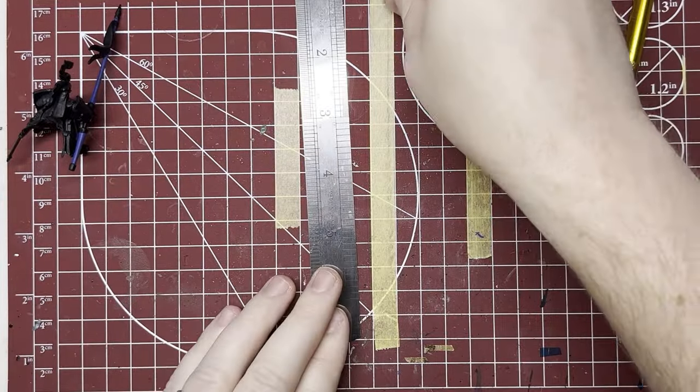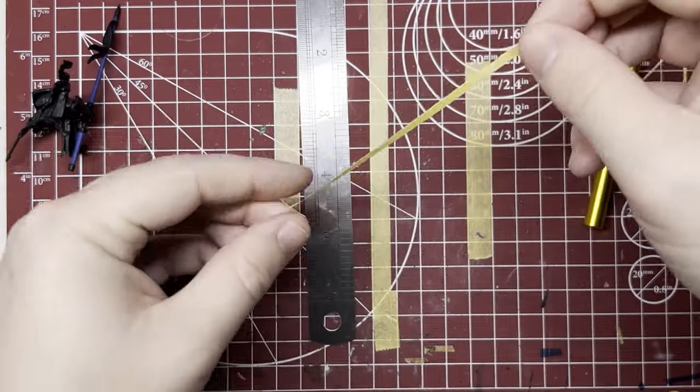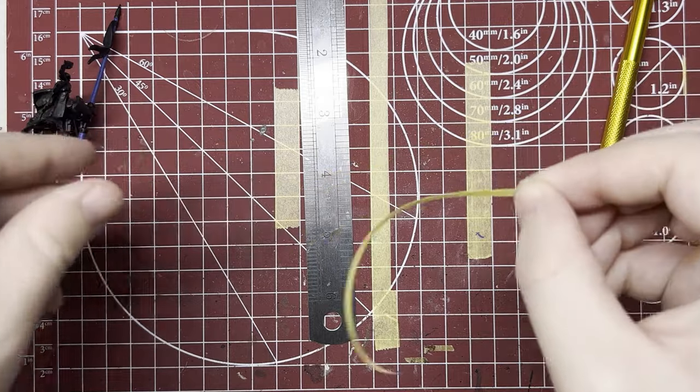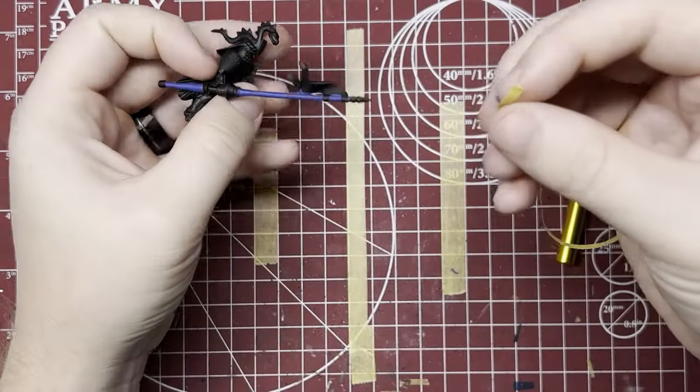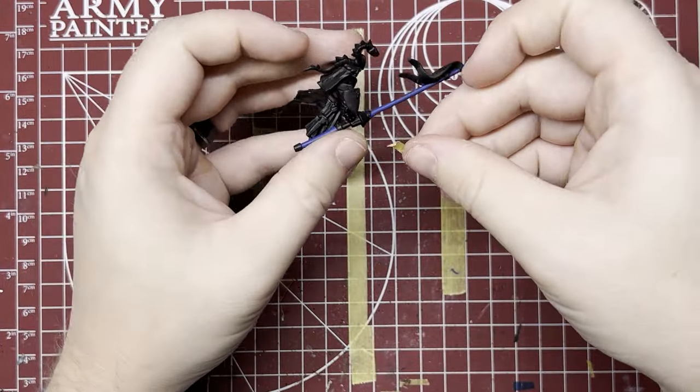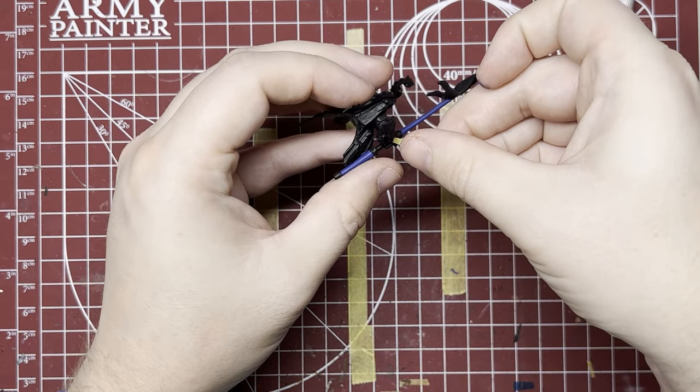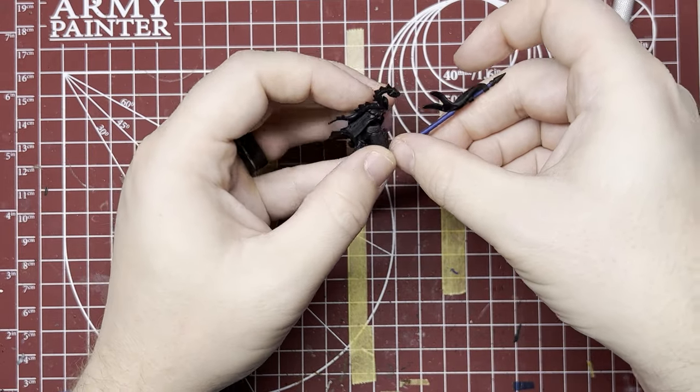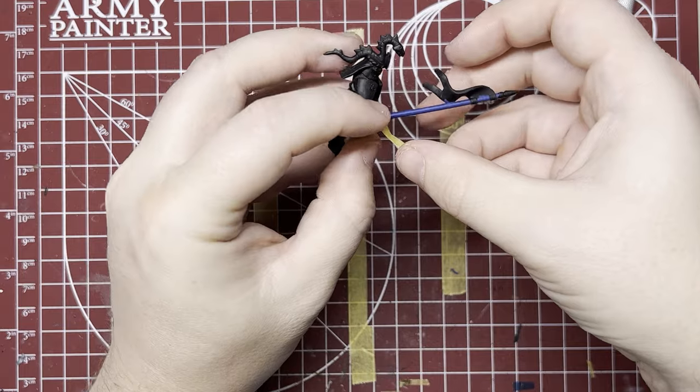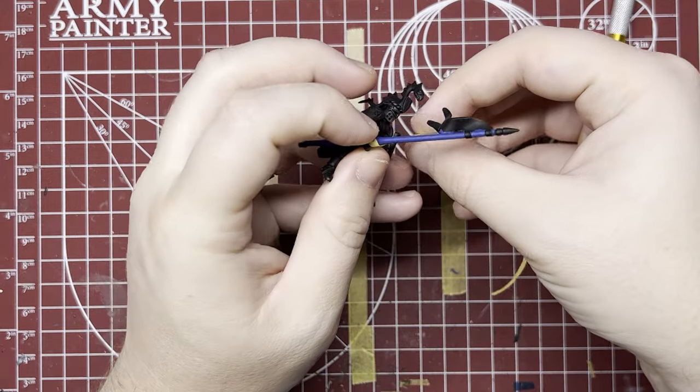Here we have a nice even line for us to wrap around the shaft of our lance. Starting from that handle, we're going to tightly wrap the strip of masking tape around the lance in the pattern we want it to be.